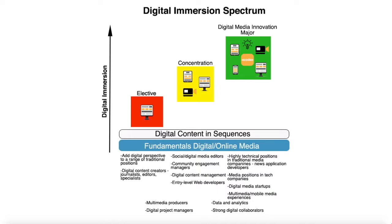At the highest level of immersion is the digital media innovation major. We expect graduates to move into technical positions in traditional media companies — like a news application developer at the New York Times or Washington Post — or into media positions at tech companies like Facebook, Twitter, or Google, with a solid understanding of the mission and goals of a technology company. We've also had students move into roles at local Austin-area companies like SpreadFast or HomeAway and assimilate very quickly because they understood the environment.